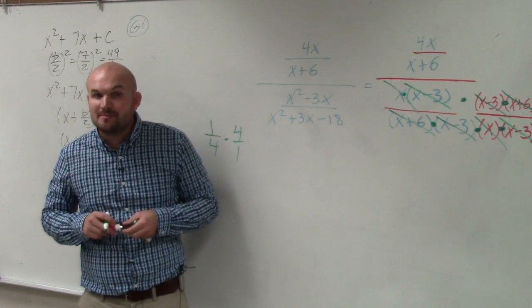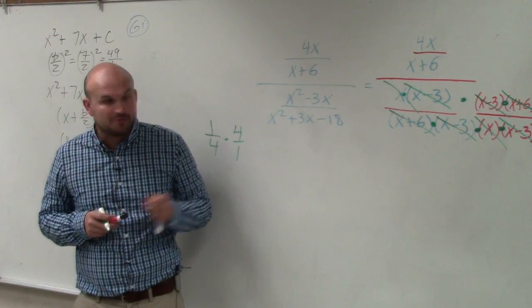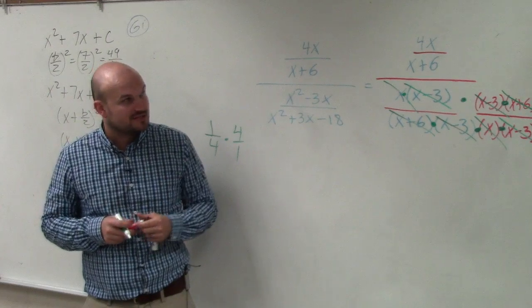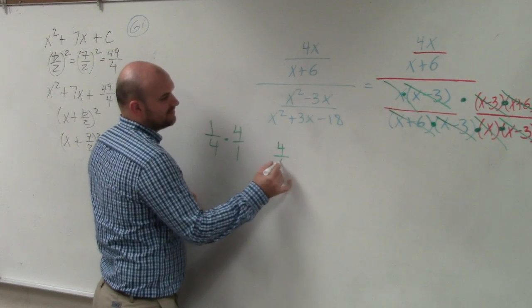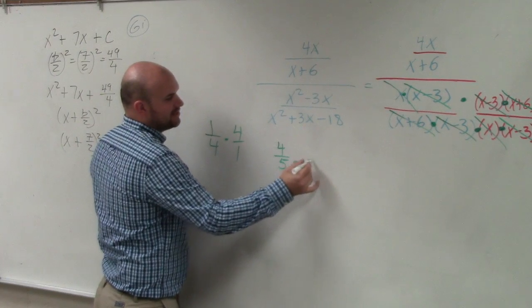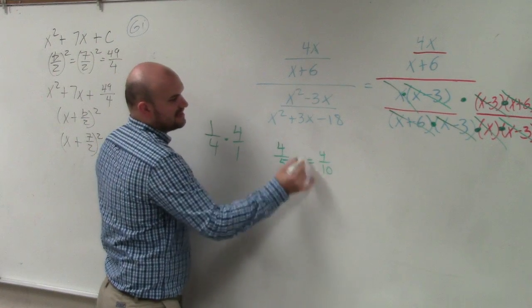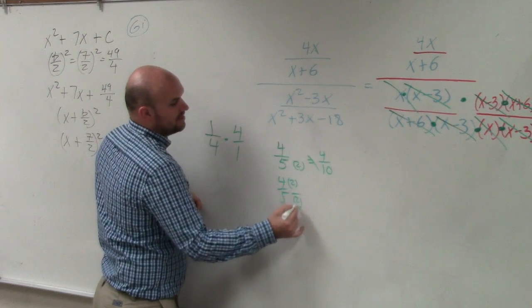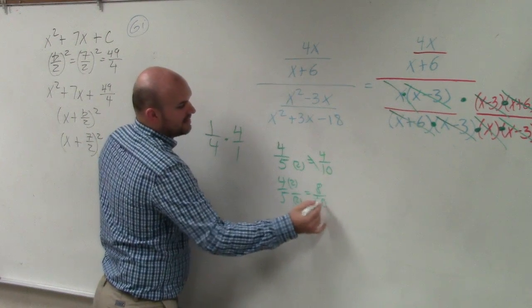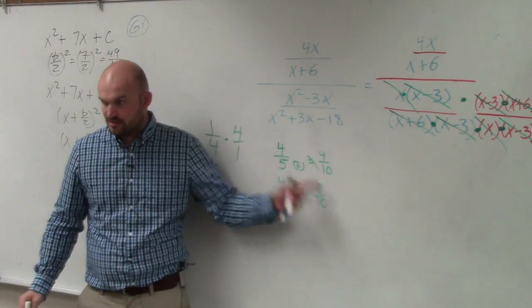Whatever you do in the denominator, ladies and gentlemen, you have to do in the numerator to produce equivalent fractions. You just can't take 4 over 5 and just multiply the bottom by 2. That's 4 over 10, that's not the same. But if you did 4 over 5 and multiply by 2 over 2, then you'd have 8 over 10, which is the same thing as 4 fifths.